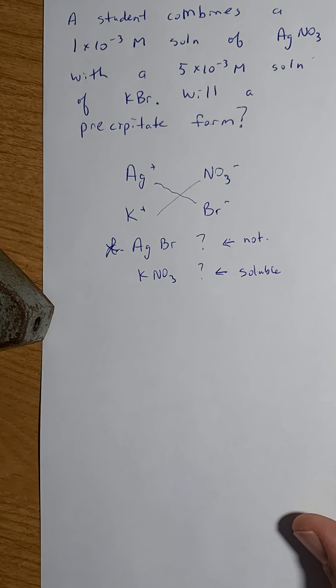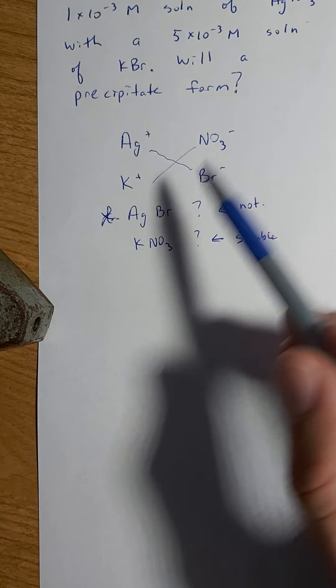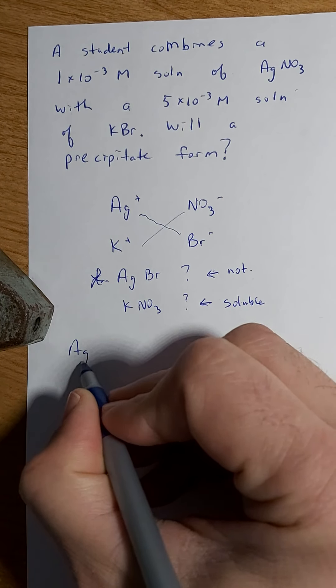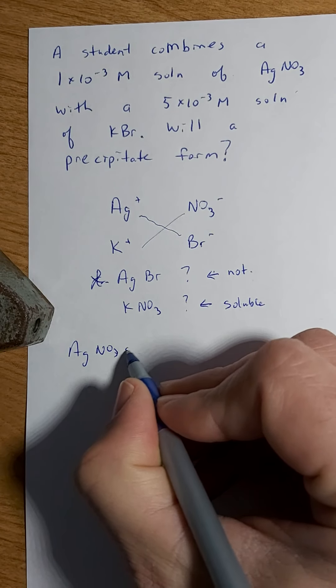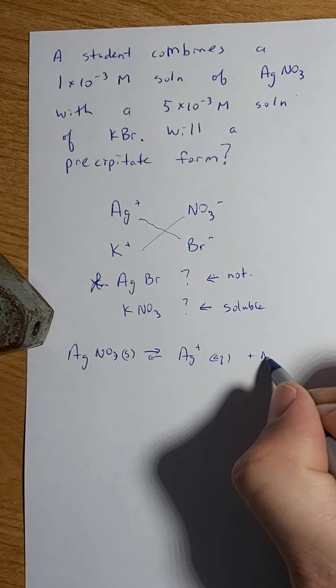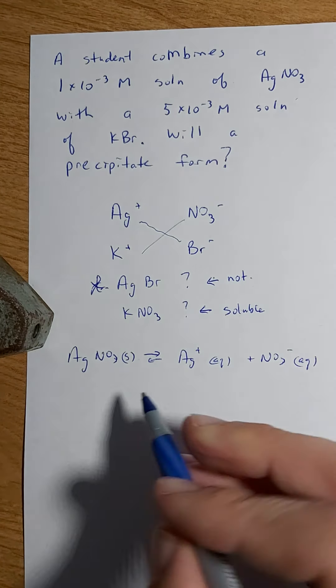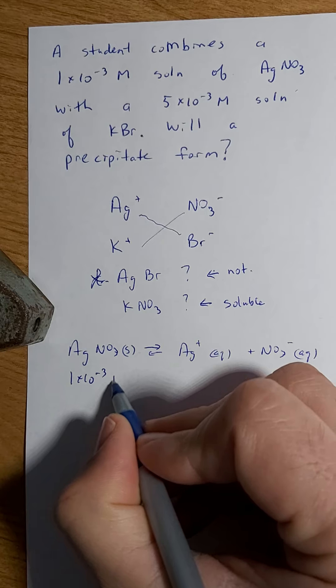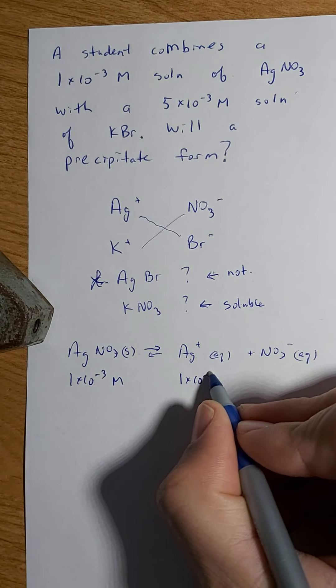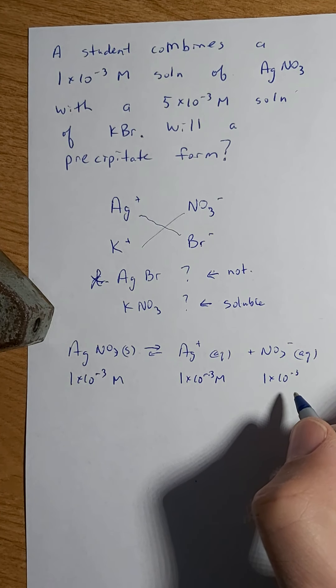So let's set about seeing if a precipitate will actually form. Where's Ag coming from? Let's look at AgNO3. AgNO3 solid will break apart and give me Ag+ and NO3-. And I know that the concentration of this is 1x10^-3 molar. And the ratio is 1 to 1 to 1. So this is going to be 1x10^-3 molar and this is going to be 1x10^-3 molar.